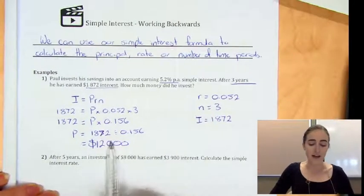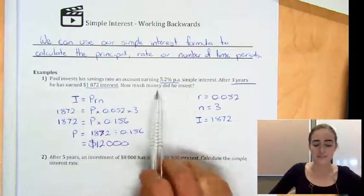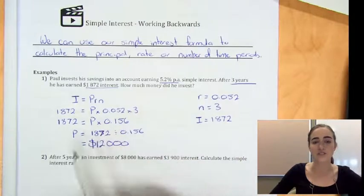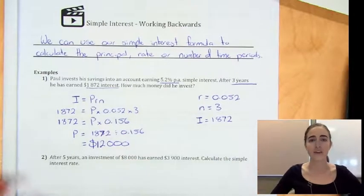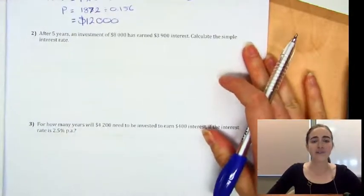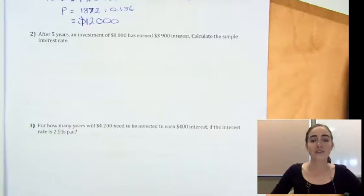Okay, so that is the amount that needed to be invested at the start under those conditions to end up with $1,872 interest. Let's have a look at the second question. After five years, an investment of $8,000 has earned $3,900 interest, and we're asked to calculate the simple interest rate.